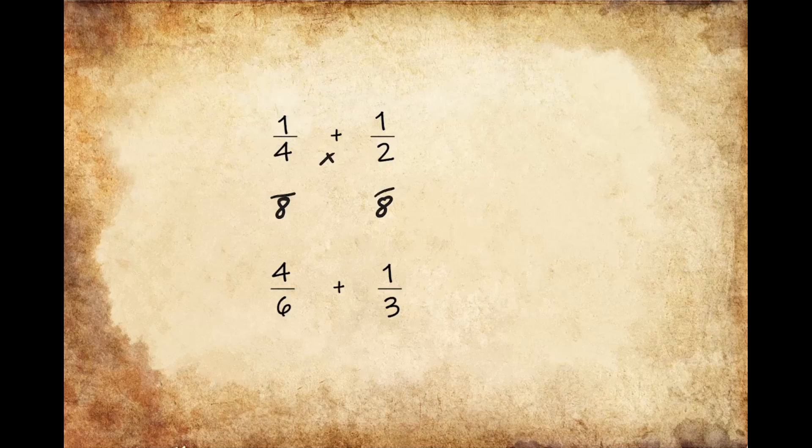So in order for me to get 8 for the first fraction, I had to multiply 4 times 2. And to keep things equivalent, I need to make sure that I multiply the numerator as well by the same value. So 1 times 2 gives me 2.